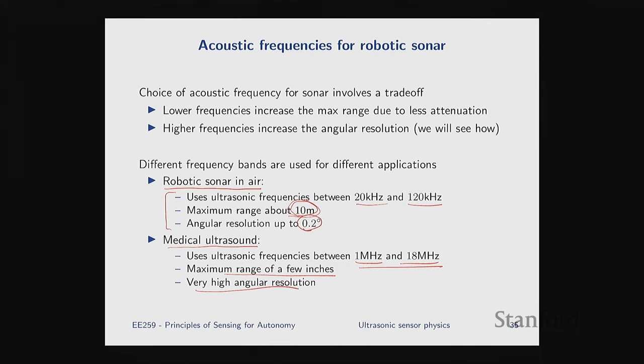Regarding sub-audible frequencies below 20 Hz: you can generate them, and you'd get long range since attenuation is very low, but you'd get very poor resolution. There are some practical issues too — you need large drivers for such low frequencies. Some animals apparently use these frequencies, but for robotics applications, sub-audible frequencies haven't been commonly used.